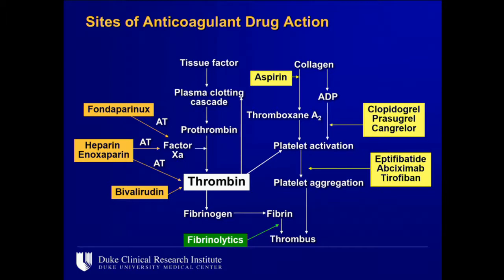This is a very simplified version of the coagulation cascade — what we all learned in medical school has completely changed. What I want to point out are a few things about antithrombin therapy, because that's what we're going to talk about — not antiplatelet therapy, but antithrombin therapy. The different sites of action are shown on this slide. The agents studied in large trials are fondaparinux, heparin or enoxaparin, and bivalirudin.